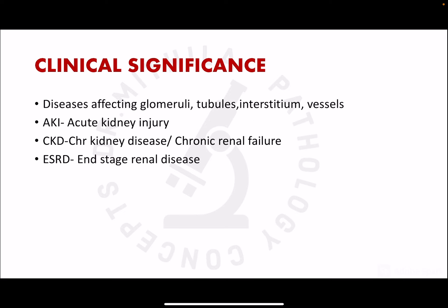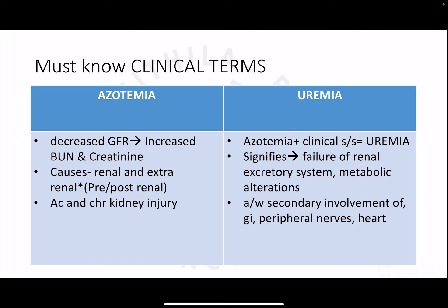Now for clinical significance — why we need to study renal pathology. Various diseases can affect the different parts of the kidney: the glomeruli, tubules, interstitium, and blood vessels, each with somewhat different morphology. These diseases can clinically manifest as acute kidney injury — previously known as acute renal failure — or chronic kidney disease, previously called chronic renal failure, which ultimately ends in end-stage renal disease.